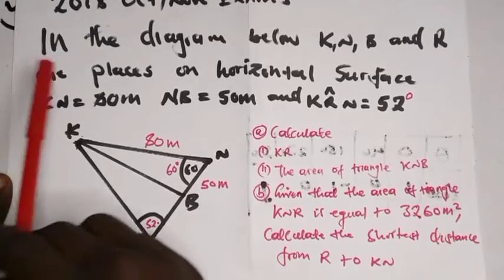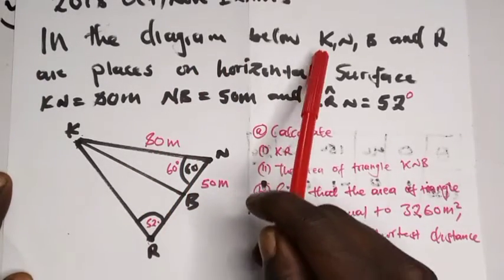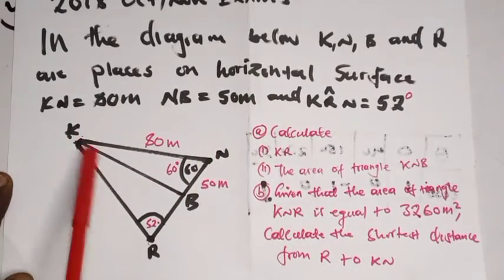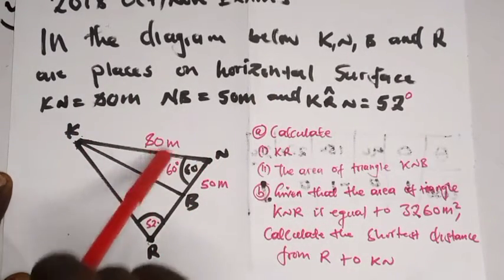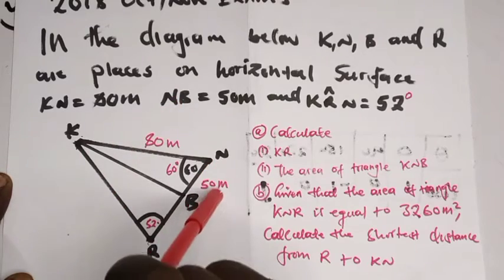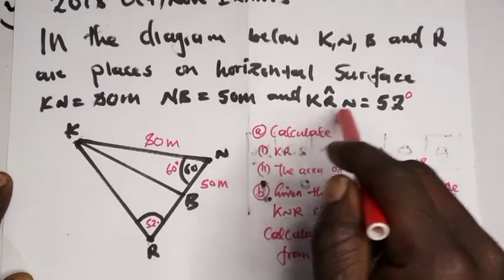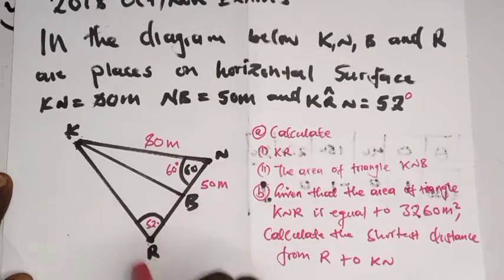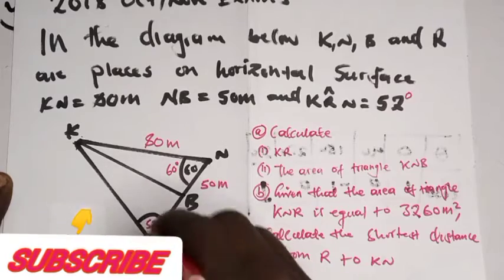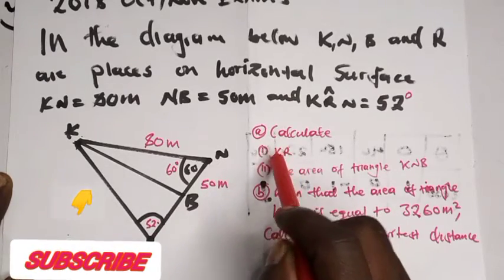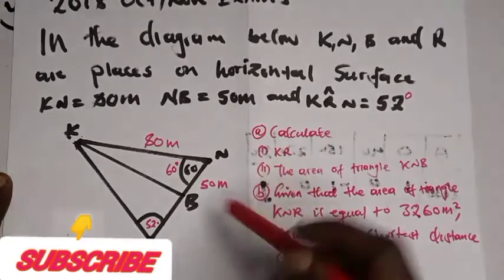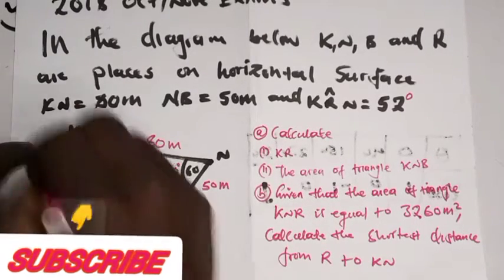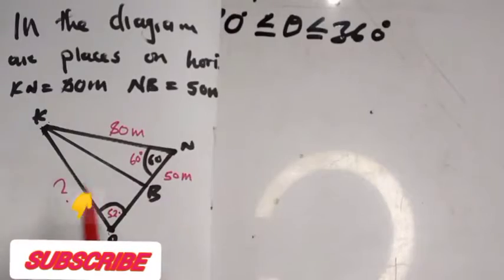In the diagram below, K, N, B and R are places on a horizontal surface. KN is 80 meters, NB is 50 meters, and angle KRN is 52 degrees. We are asked to calculate KR, so we have to find this distance here, KR.